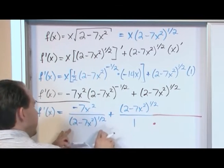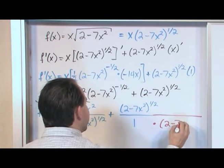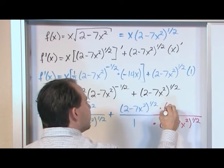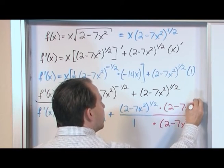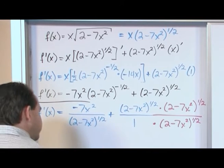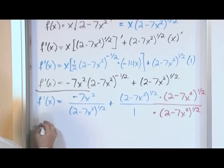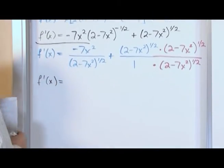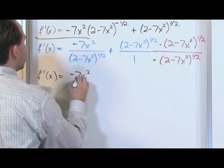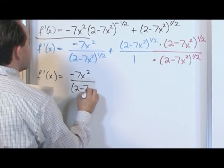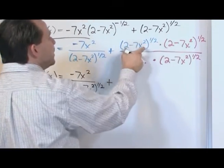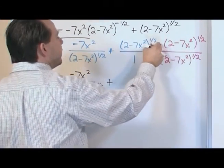The easiest way to do that is to multiply this by (2 minus 7x squared) to the 1/2. If we multiply it on the bottom, we have to multiply it on the top. We only do this so that we can get a common denominator across both sides. But a nice thing happens once we do it. On the top, we have negative 7x squared over (2 minus 7x squared) to the power of 1/2. And then over here on the right hand side, we have this multiplied by this. But notice the bases are exactly the same. So we just add the exponents. So 1/2 plus 1/2 is 1.